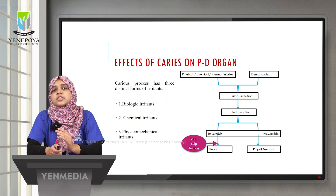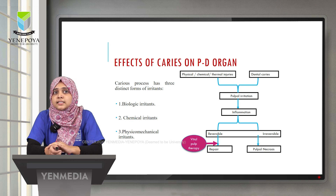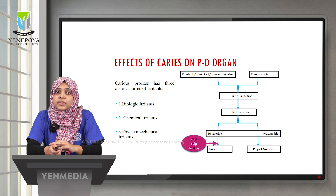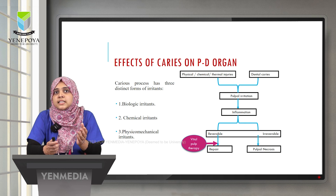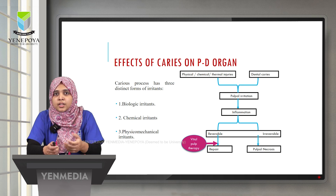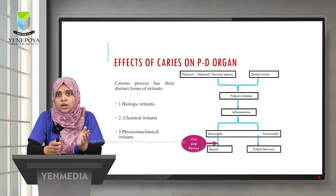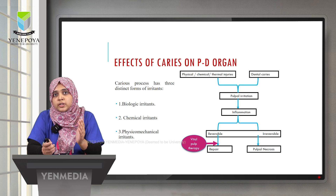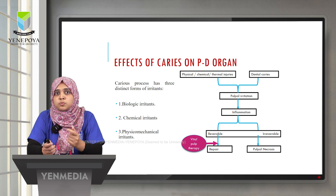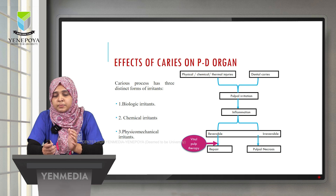Any caries process has distinct forms of irritants: biological irritants such as microorganisms and their metabolites, chemical irritants such as acids, and physico-mechanical irritants such as thermal injuries. These irritants lead to pulpal irritation and inflammation, which can be either reversible or irreversible. In the initial reversible stage, treatment via vital pulp therapy may lead to pulp repair. If it becomes irreversible, only root canal therapy is effective.